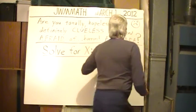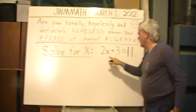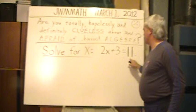So in words, this equation is saying: what number, when multiplied by 2, and then you add 3 to it, gives 11?